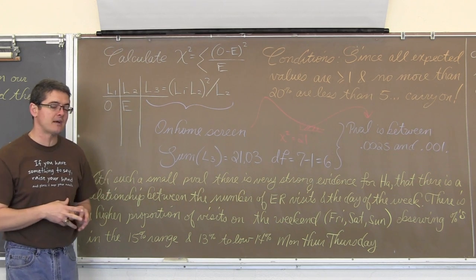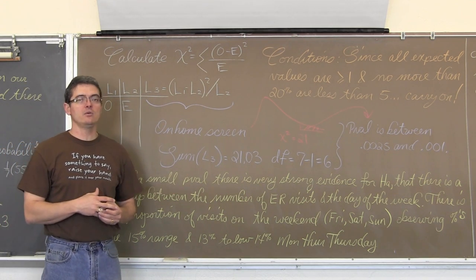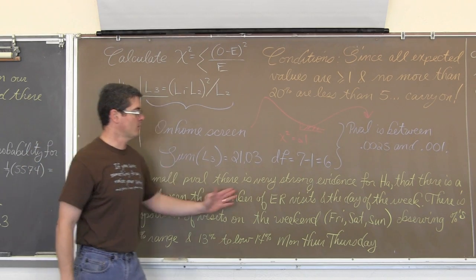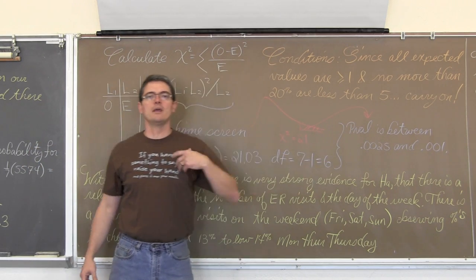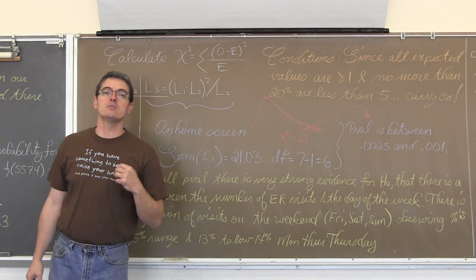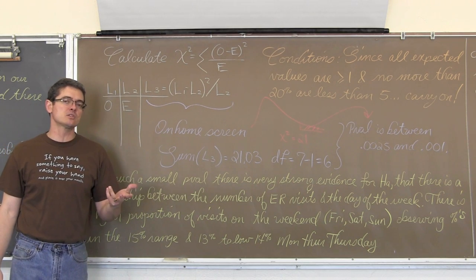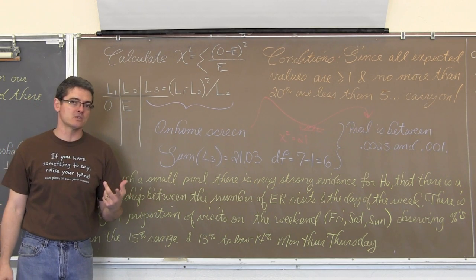All your summary statements after a significance test must use the value, your p-value, and then refer to whether you have evidence for H sub a or you don't have evidence for H sub a. Or you reject H sub 0 or you fail to reject H sub 0.